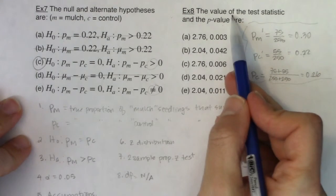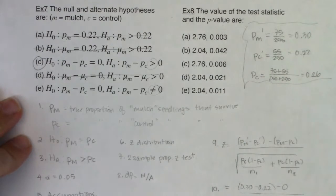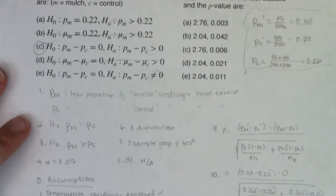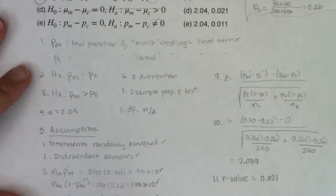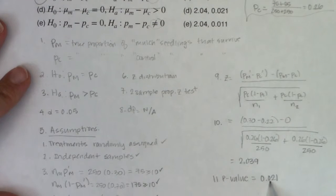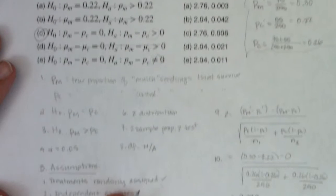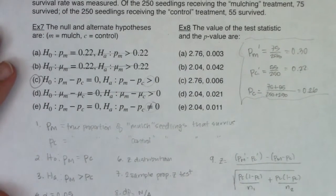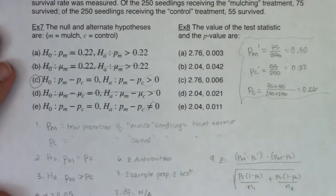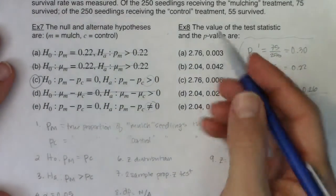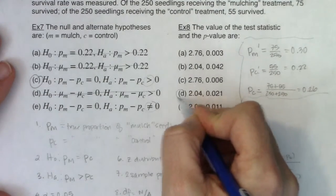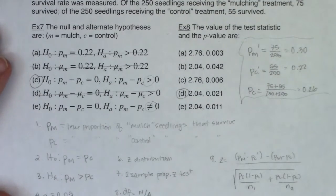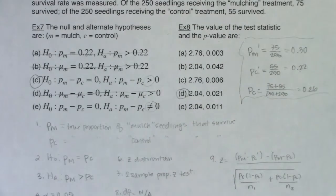The next question asks for the value of the test statistic and the p-value. From steps 10 and 11, we have 2.039 and 0.021 — rounding gives 2.04 and 0.021. Looking through the options, the answer is D.